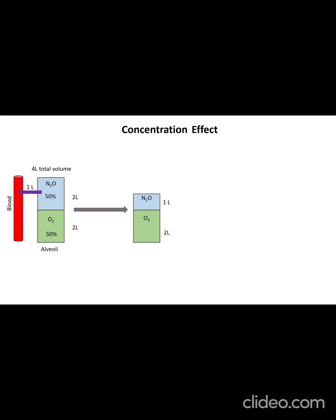But, since the initial alveolar volume of 4 liters is reduced to 3 liters, the new concentration of nitrous oxide in the alveoli is 1 third of 3 liters or approximately 33%. This is the first phase of the concentration effect, referred to as the concentrating effect where nitrous oxide concentration increases even after it has rapidly diffused.